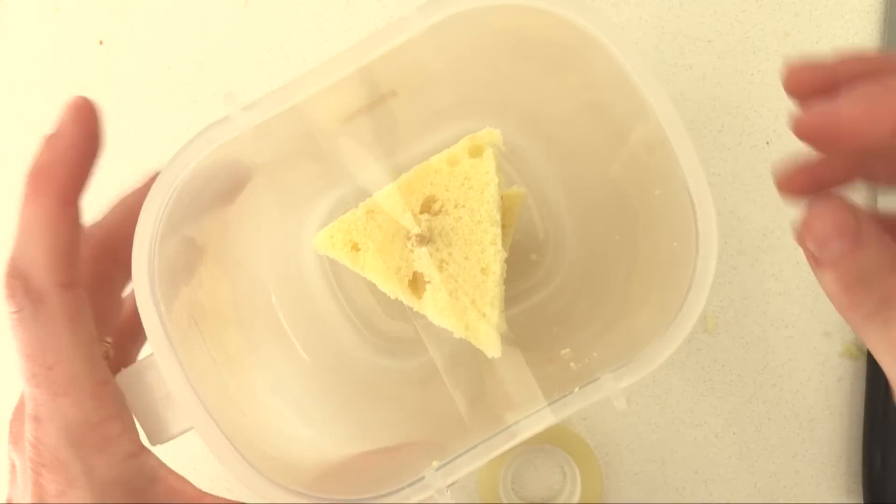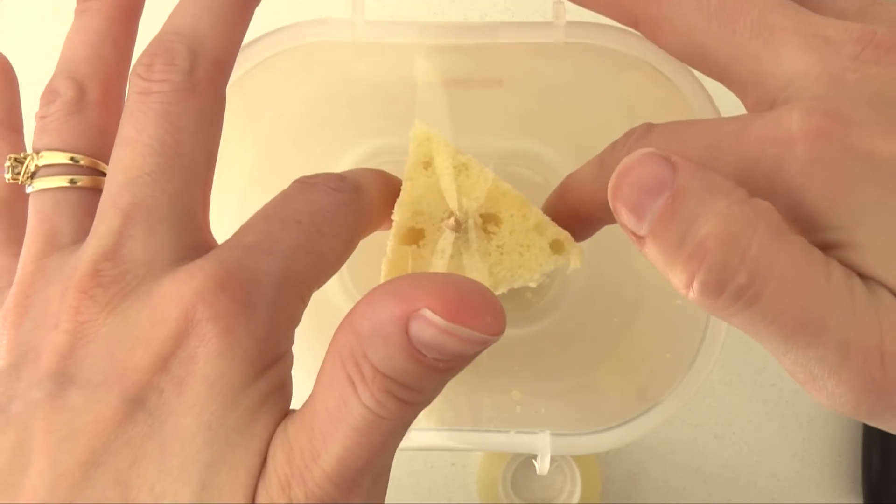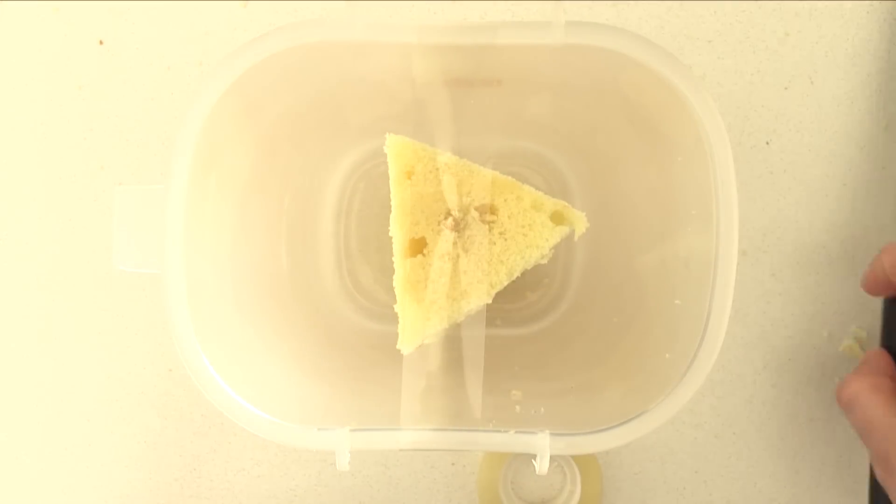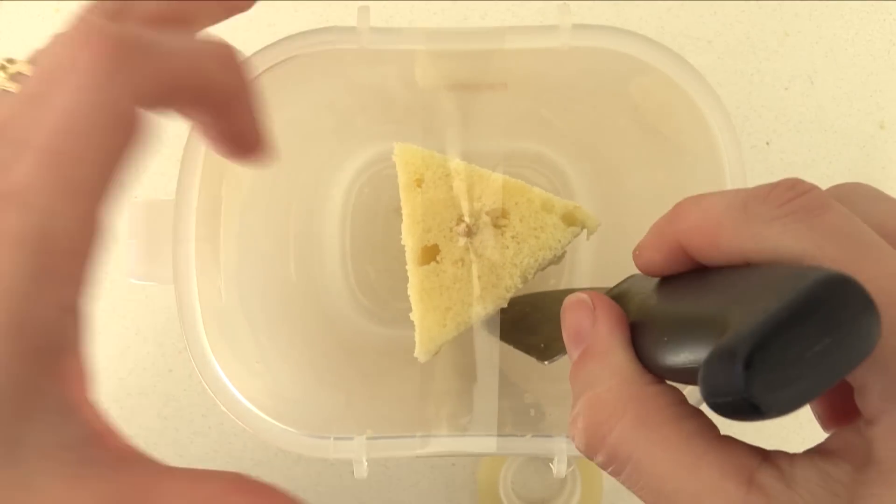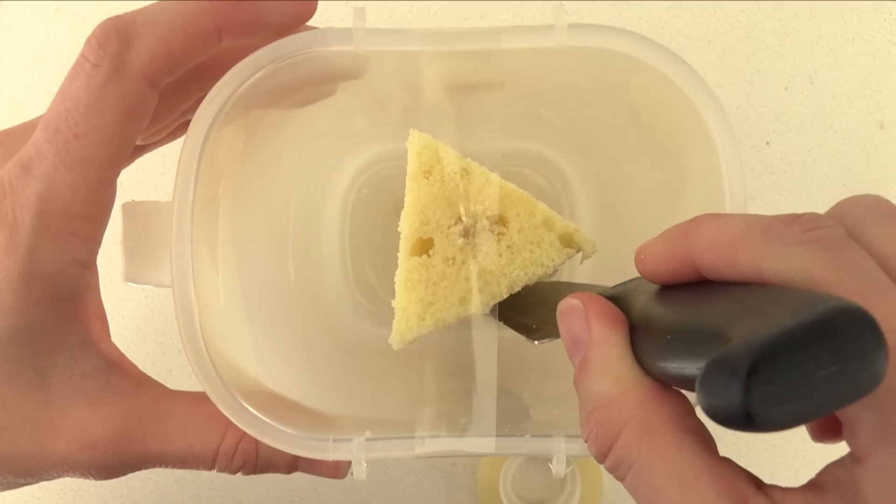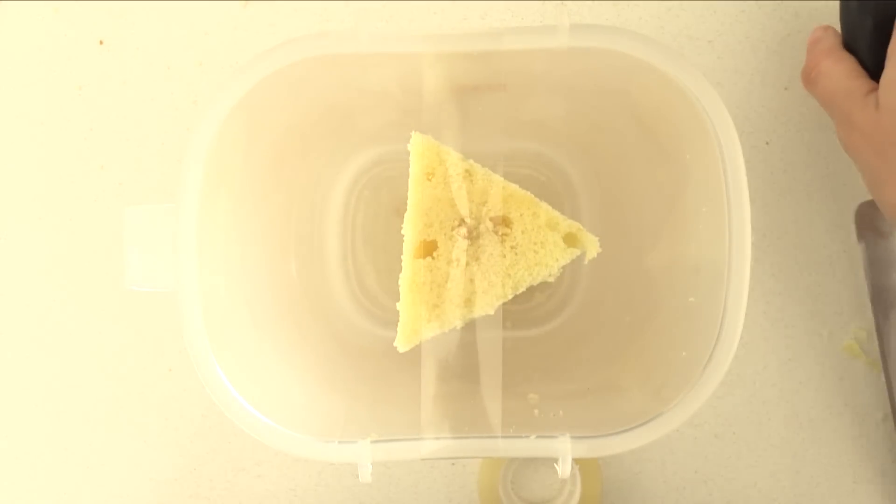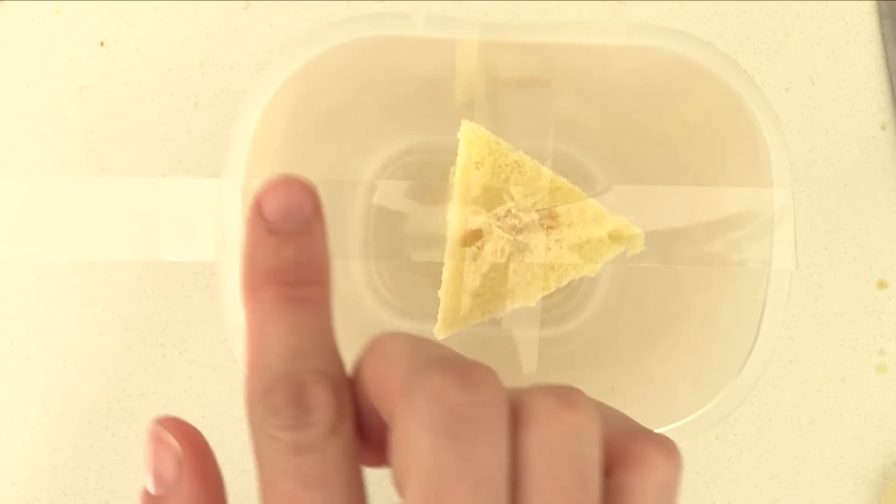I might make another youtube cake later that is a normal cake but with fondant decorations on the outside representing some of the different channels. What youtube channels do you want to see on that cake? Let me know in the comments.